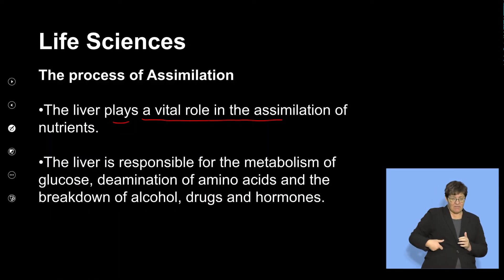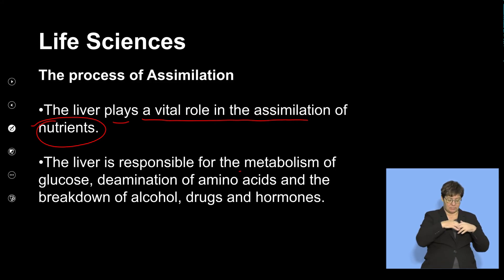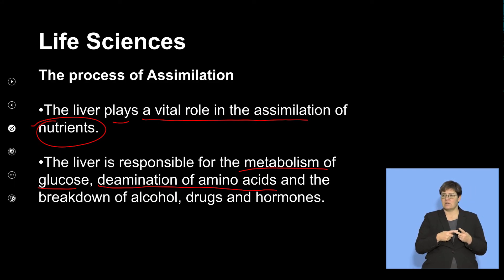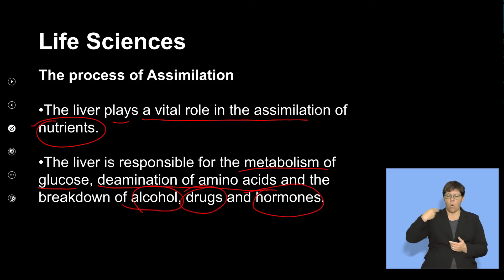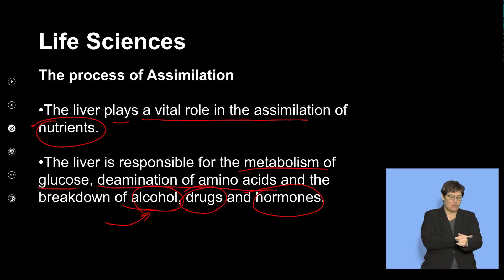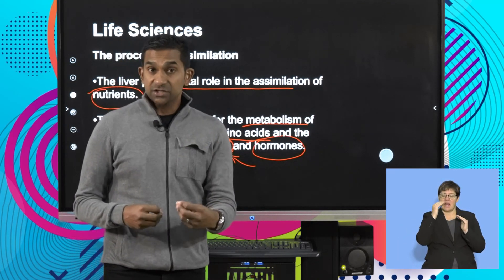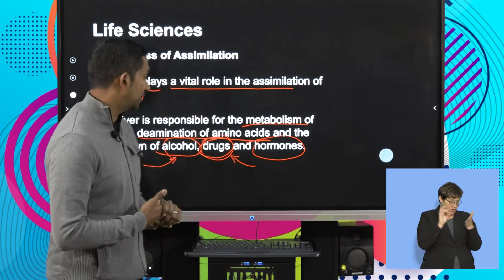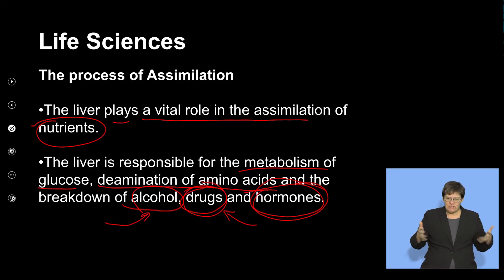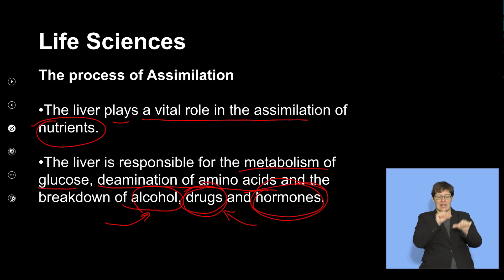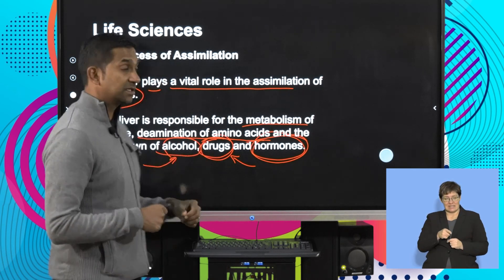The liver plays a vital role in the assimilation of nutrients. It is responsible for the metabolism of glucose, the deamination of excess amino acids, and the breakdown of alcohol, drugs, and hormones. Consumption of alcohol affects the liver because it must carry out extensive detoxification. Medication is often toxic and must be broken down into less toxic substances. Hormones that have served their function are broken down and released. The liver changes the chemical nature of substances not needed and releases them through excretion.